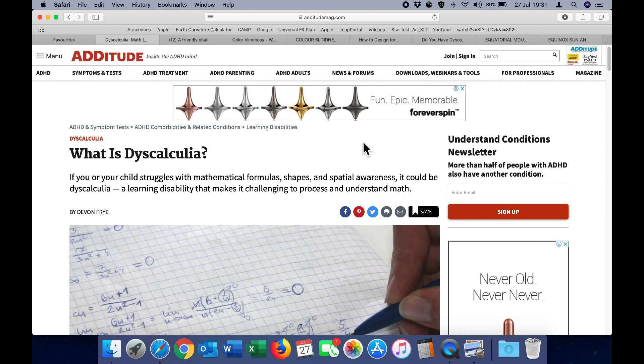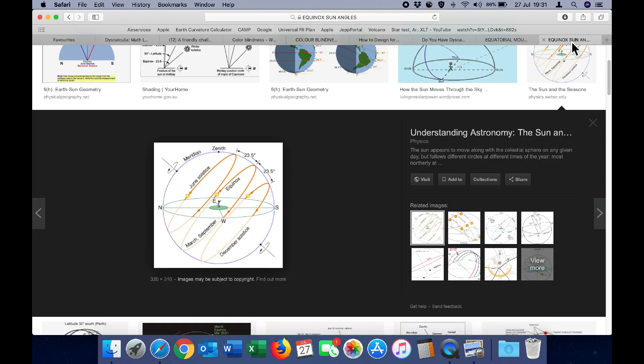And I believe this is the reason why the average flat earther simply cannot understand how the equinox sun angles prove the earth is not flat. The geometry of those angles with a local noon sun angle matching the latitude, the sunrise at 090 degrees and the sunset at 270 degrees all over the earth on the day of the equinox can only occur if the earth is a ball.